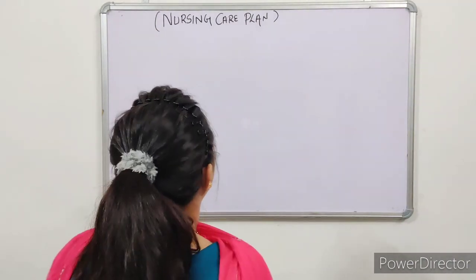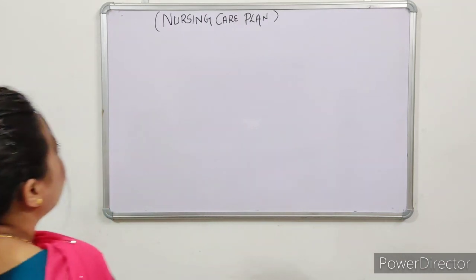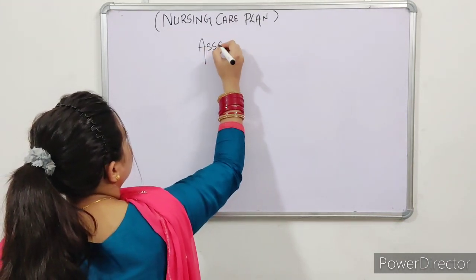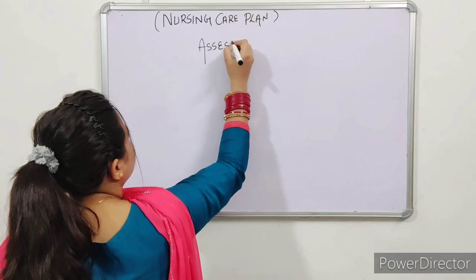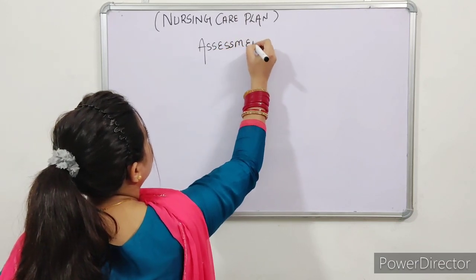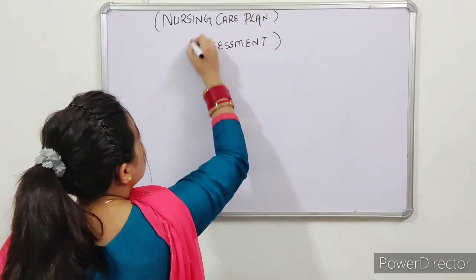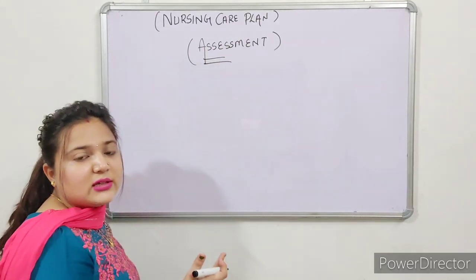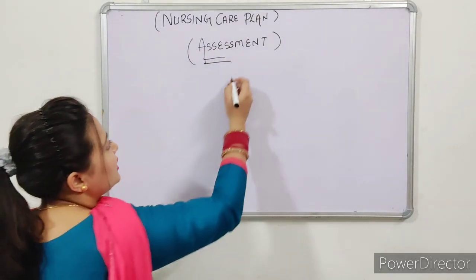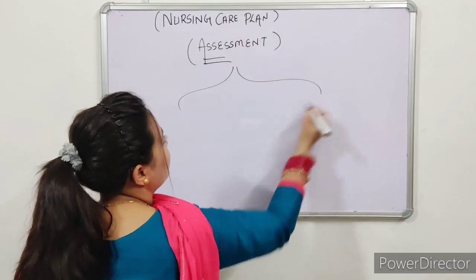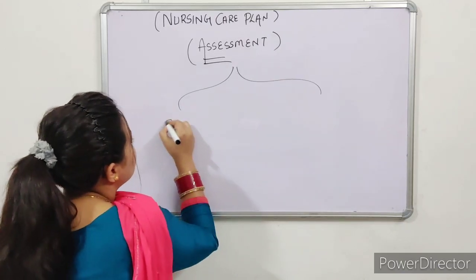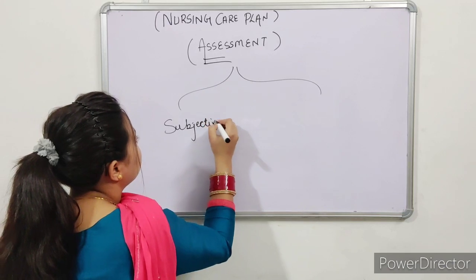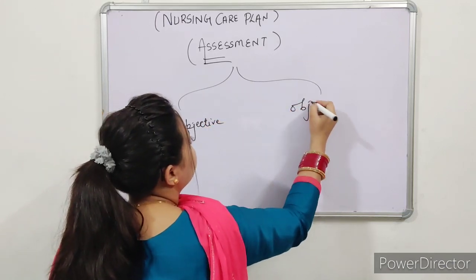The first step is assessment. Assessment is what we need to do — data collection. Data is of two types: subjective and objective.